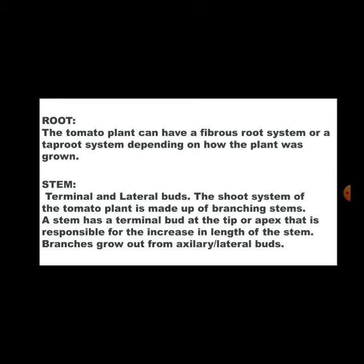Now we will study the root and stem of this plant. The tomato plant contains fibrous root system and tap root system depending upon how we are planting it. Like if we are growing by seeds, it can be tap root. Or if we are growing by grafting method, there will be fibrous root. The shoot system — branching stem. There is a terminal bud at the tip or apex that is responsible for increasing the length. Axillary and lateral buds are responsible for branch growth from the stem.